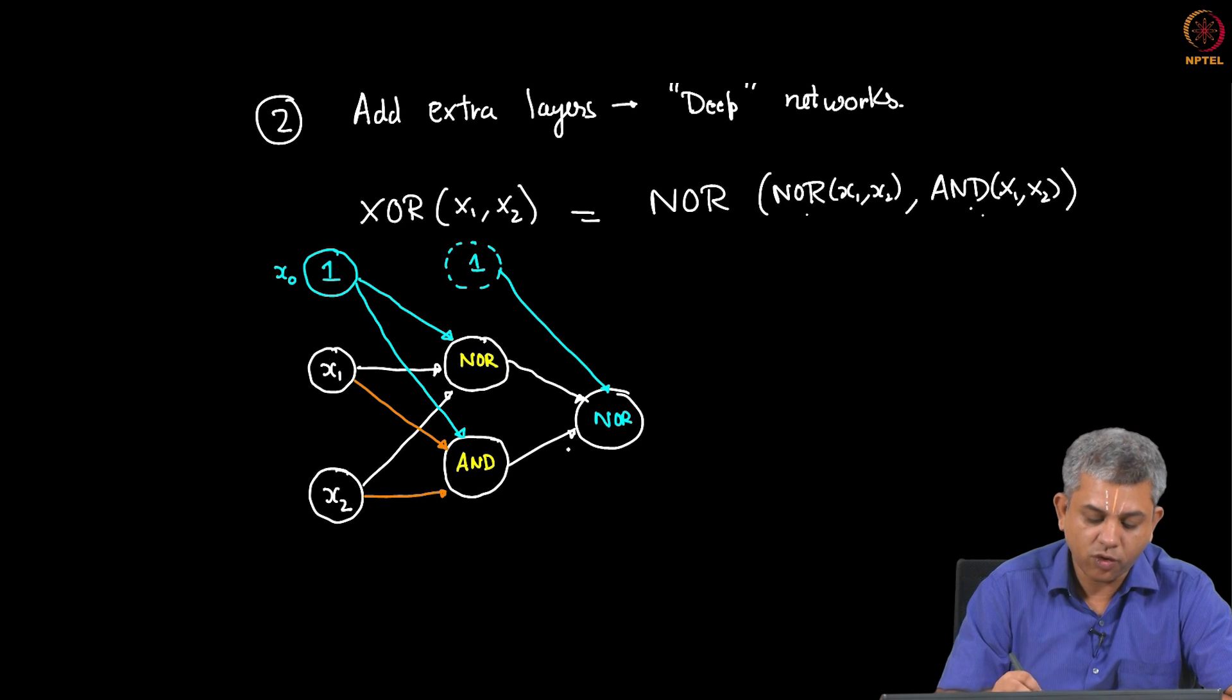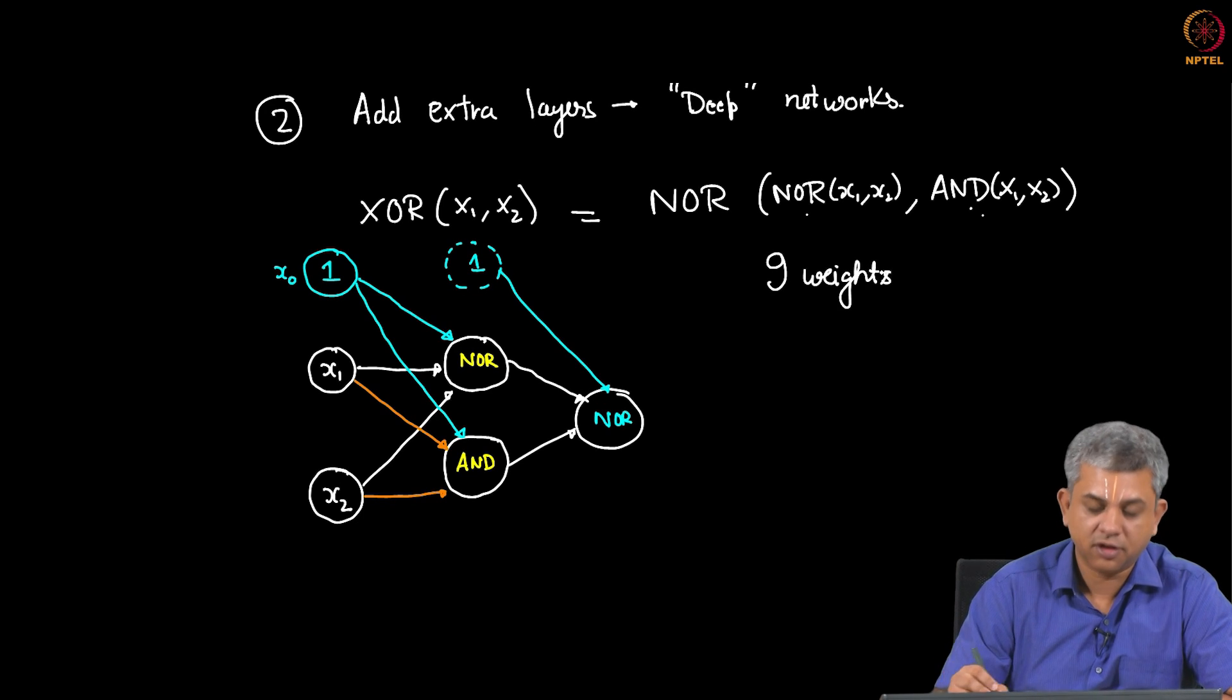These weights once again were the same weights as this NOR gate. So you can now see you have 1, 2, 3, 4, 5, 6 weights here and 3 more weights here, we have a total of 9 weights. The output of this as we know is XOR.